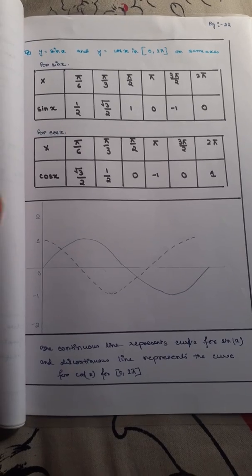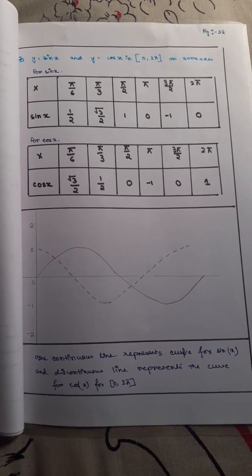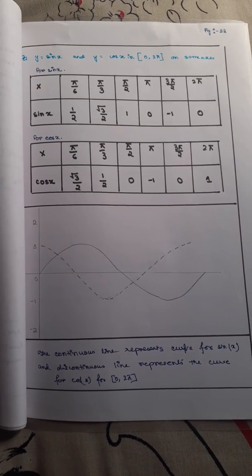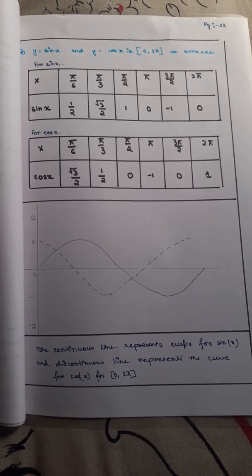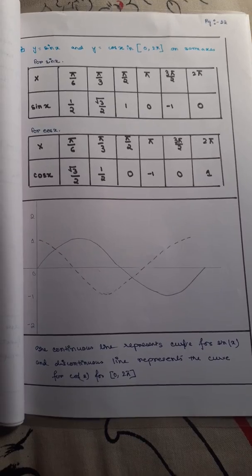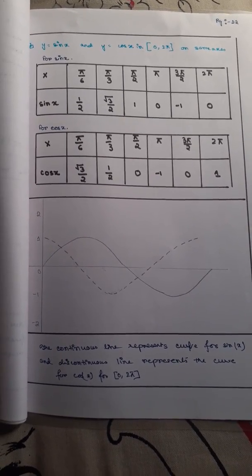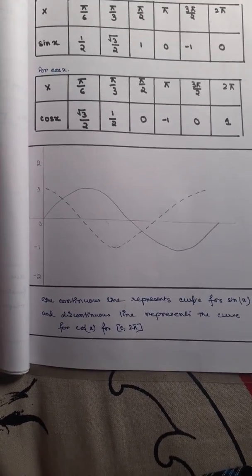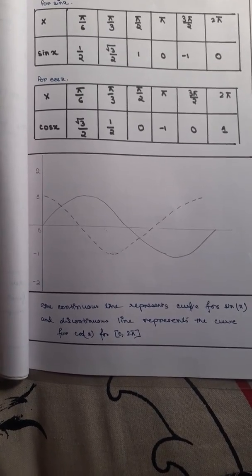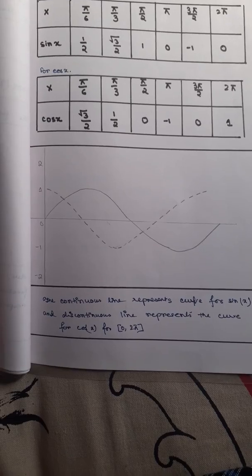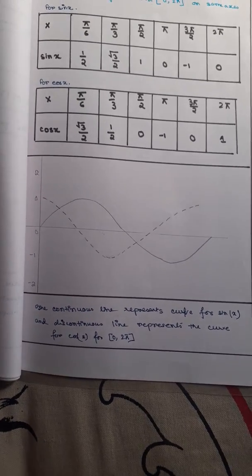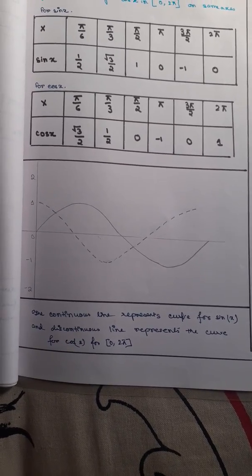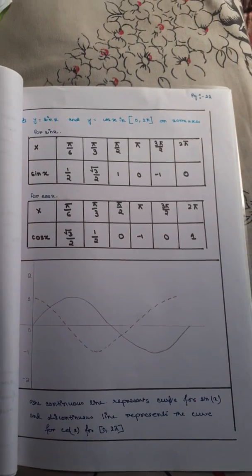This is the 22nd page of my project. Here I have drawn y equal to sine x and y equal to cos x in the interval (0, 2π) on the same axis. So for this type of curve, we are getting two curves over the graph. You can see I have drawn one with normal line and I have drawn the other graph with dotted line. The continuous line represents the curve for sine x, and the discontinuous line represents the curve for cos x.